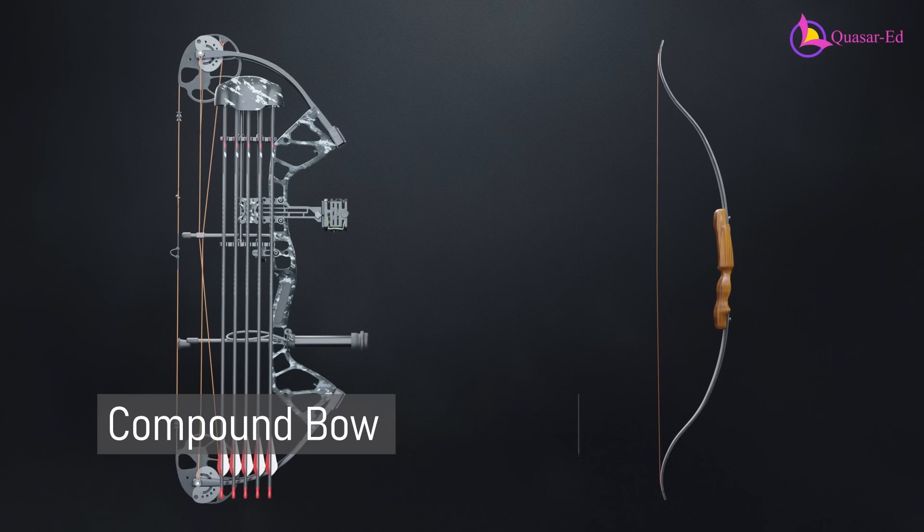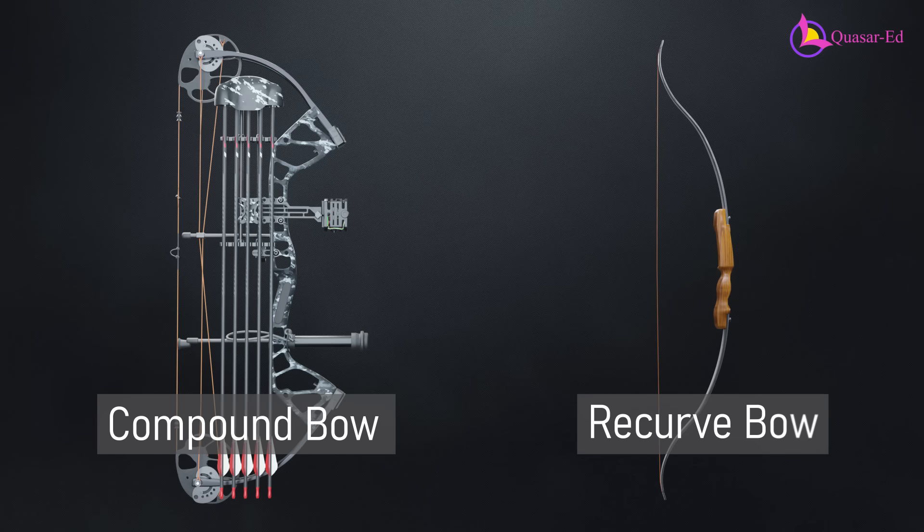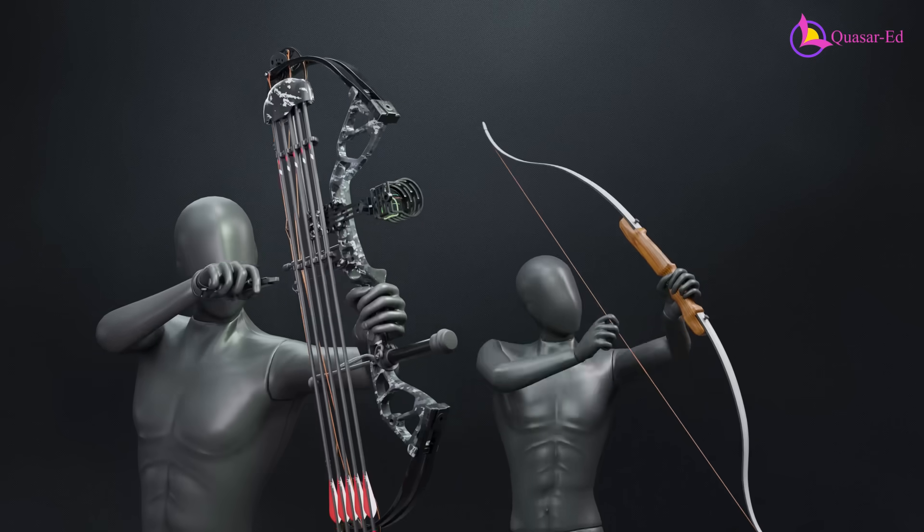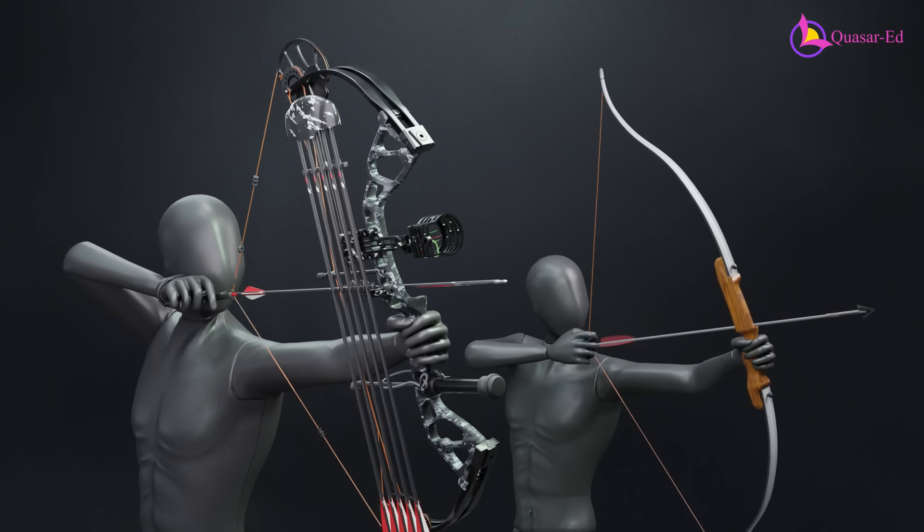By contrast, the more familiar recurve bow is nothing more than a string on a stick with the tip curving away. But when it comes to power, the compound bow can deliver more force than a recurve bow.